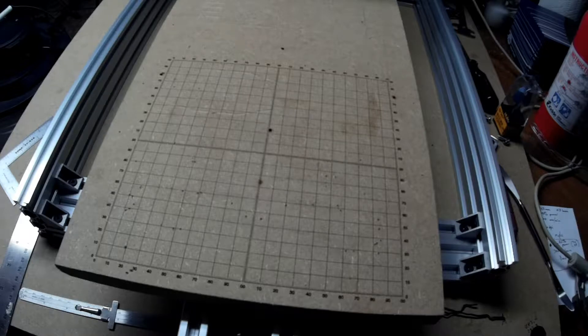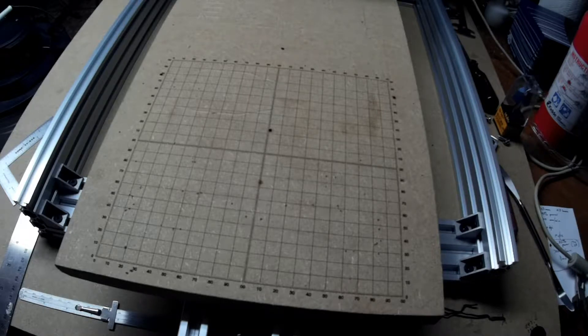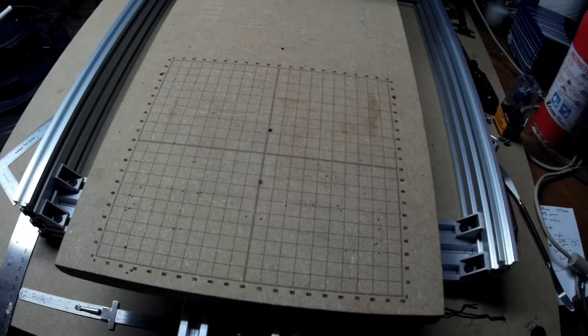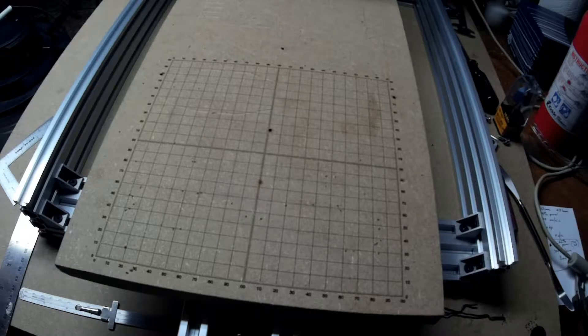But I wanted to check and make sure that the X axis was exactly perpendicular to the Y axis, so I needed to make sure that this grid is a square.